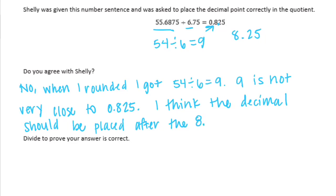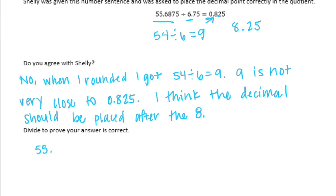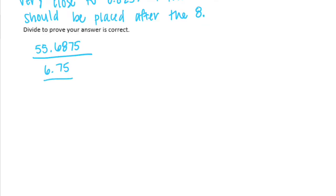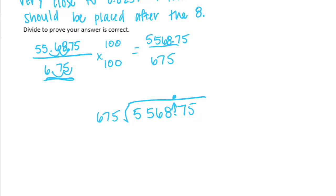Divide to prove your answer is correct. 55.6875 divided by 6 and 75 hundredths. So let's start by making the divisor a whole number divisor like we were doing in the previous lesson. So that's 2 powers of 10 or 100. 675. That would turn into 5,568 and 75 hundredths. So now we can divide.